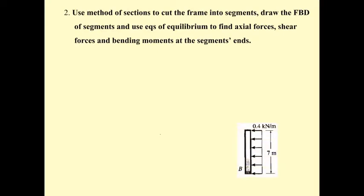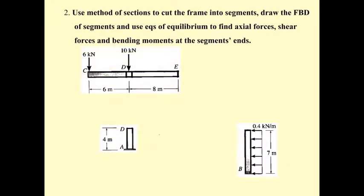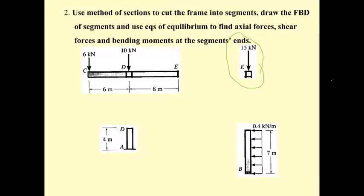We separate the frame into three parts. The CDE segment is a cantilever beam. We also need to consider the joint at E this time because the joint has a 15 kN force applied. Whenever a joint has a force, you cannot neglect it. In the previous example, forces could transfer directly from the column end to the beam end because there were no forces or moments at the joints, but here we cannot neglect it.